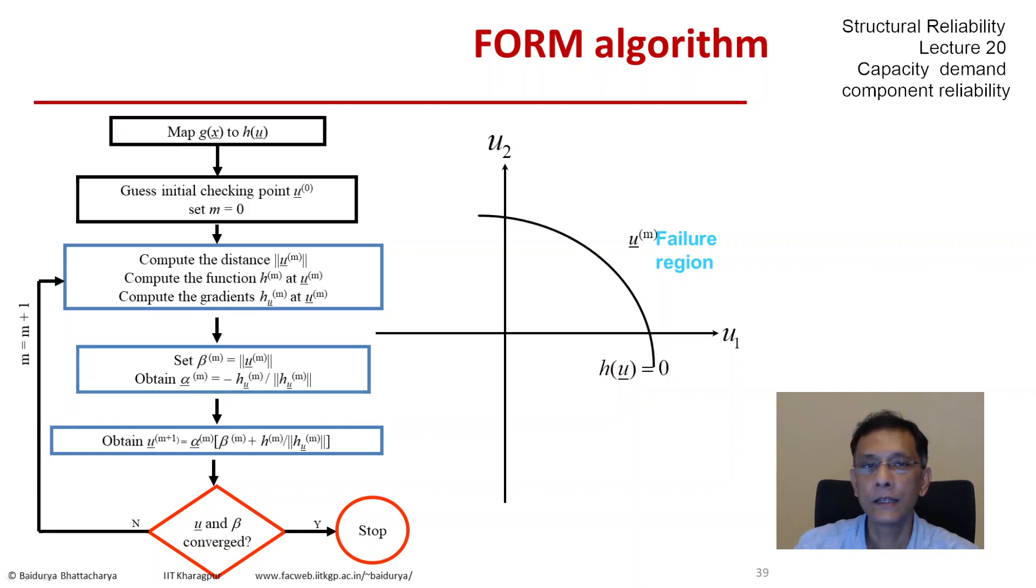Now on this plot, let us identify the key steps. Let's say there is u_m as we are somewhere in the middle of this process. That's our point in orange, and we have the vector from the origin. We know what the function is at that point, so we know the h of u going through that point, which happens to be negative. So h of u is negative beyond the limit state towards the failure region, as we know very well.